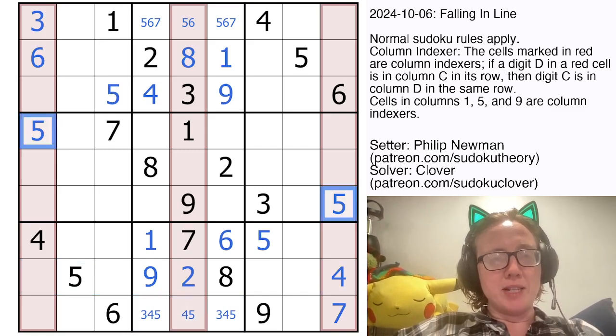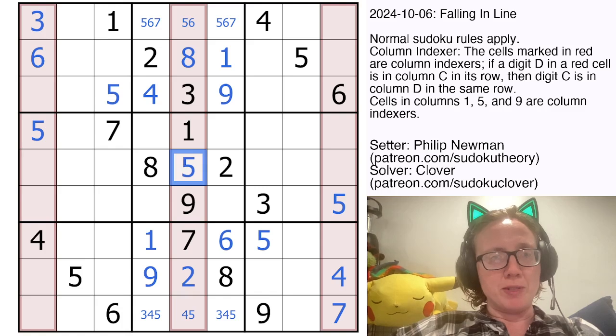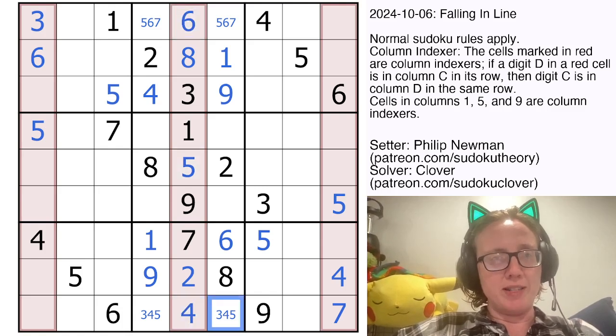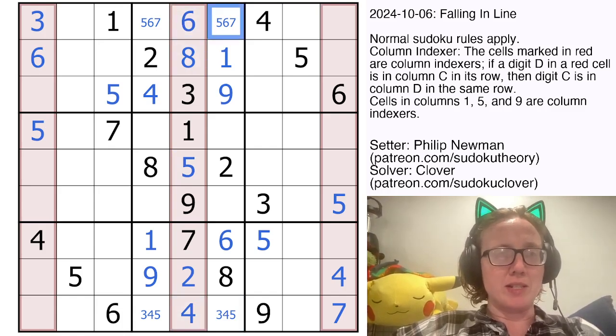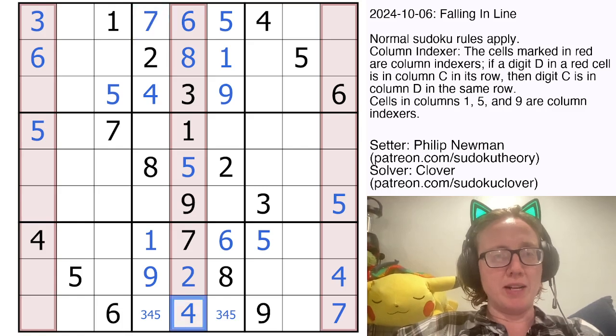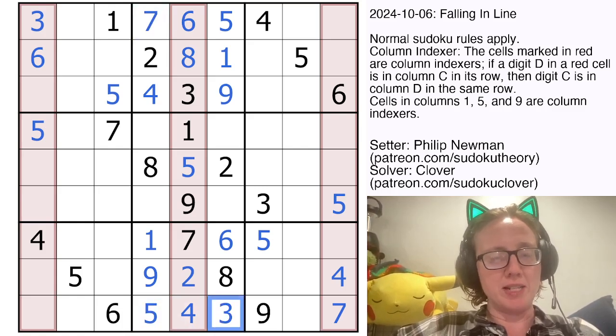Now I have two fives here. That gives me a hidden five in the central region, which is going to resolve these just by Sudoku. That now tells me that the five is in the sixth column there, so that's now a seven. And the five here is in the fourth column, so that is now a three.